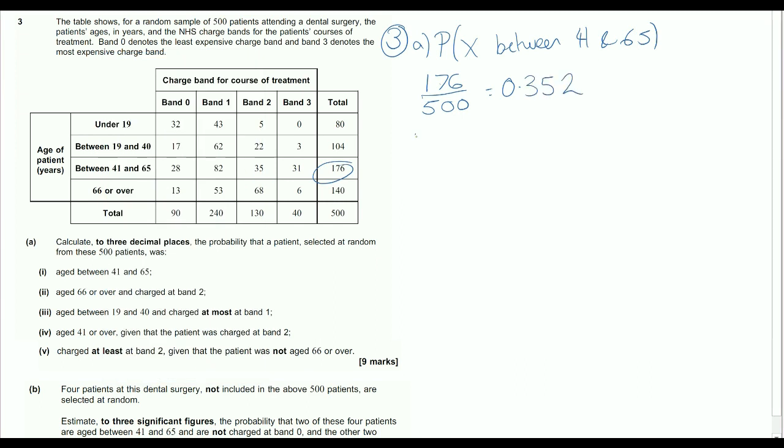Okay, now for part B, age 66 or over and charged in band 2. So the probability that they are over 66 and in band 2. So we're looking now at the people over 66 and in band 2. So we have 68 people who fall into that category. And again, we are taking it out of the entire population. So 68 out of 500.